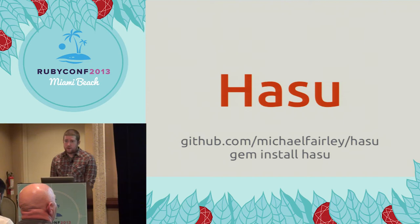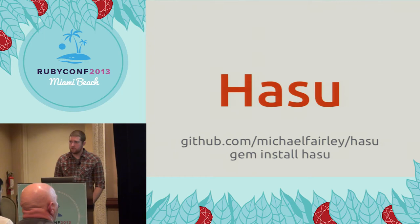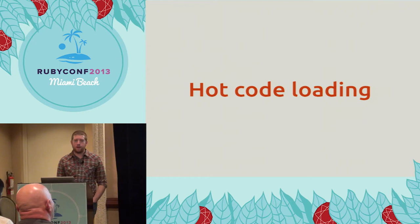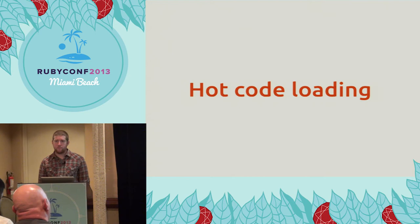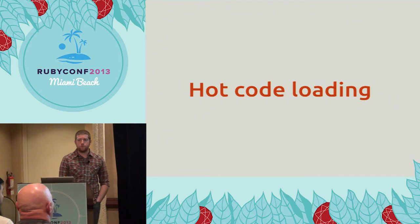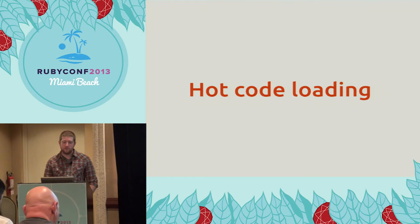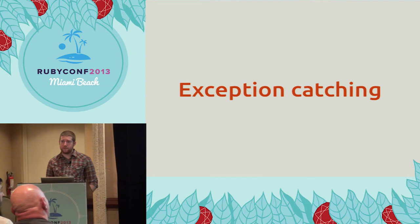I've written a library called Hasu that makes rapid iteration on Gosu games possible, and it does this in a couple of ways. The main one is hot code loading. Normally with Gosu, if you're playing your game and you see something you want to change, even after you change the code you have to exit the game, start it back up again, and play until you get back to the point where you can see your change take effect. With Hasu, it watches all of your Ruby files, and as you change them it reloads them into your running game — you'll see the effect on the next cycle through the loop.